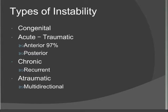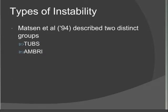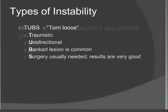To broadly categorise the types of dislocation, a surgeon called Matsen in 1994 described two groups: TUBS and AMBRI. The TUBS group are the ones we most commonly see in practice. These are traumatic, unidirectional; the Bankart lesion is normally present, and surgery is usually required for stabilisation with often very good outcomes. To remember: TUBS — they are torn loose.